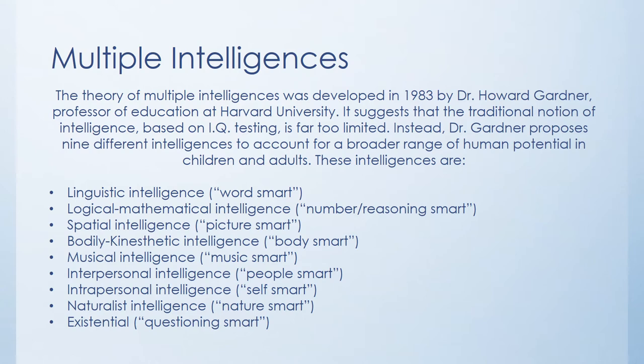Tests like the SAT and ACT really cater to logical-mathematical intelligence, but they don't necessarily cater to the other kinds of intelligences on the list. For instance, spatial intelligence — those are our artists and people who are able to render things multidimensionally. Bodily-kinesthetic intelligence refers to people who understand the body and how to get the most out of it — so if you're looking for a personal trainer, you want someone who's bodily-kinesthetic, not necessarily someone with spatial intelligence.